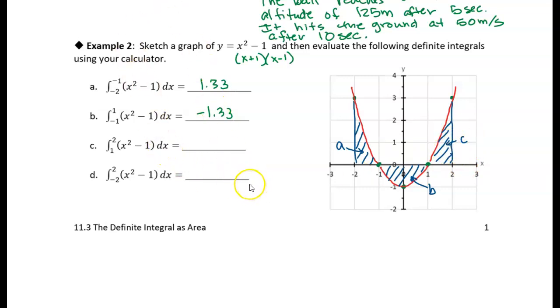This is part C. If I put that into my calculator, I get a number. You can probably guess what that area is going to be without using your calculator. Because of the symmetry of this parabola, area C looks the same as area A. And if you put it in your calculator, it's true—you get 1.33.